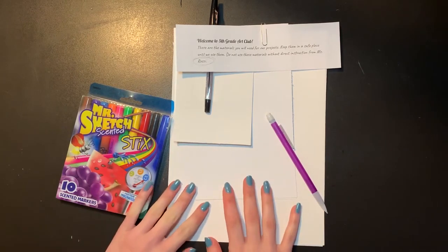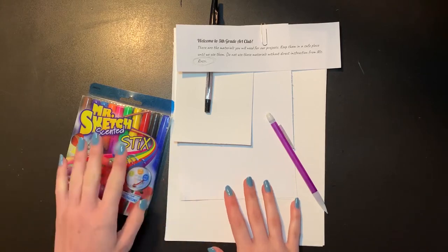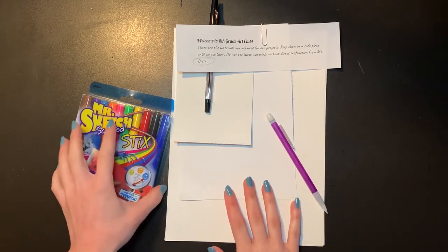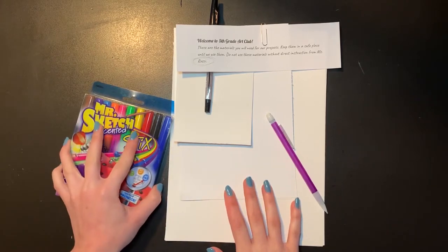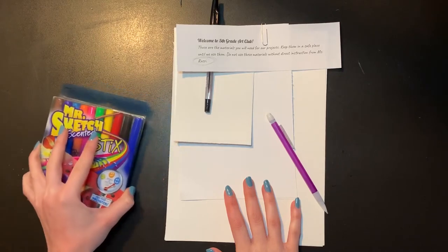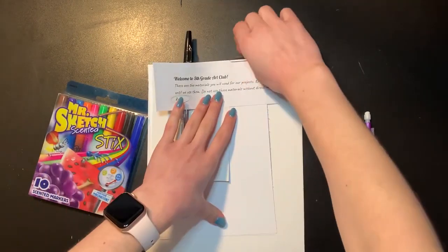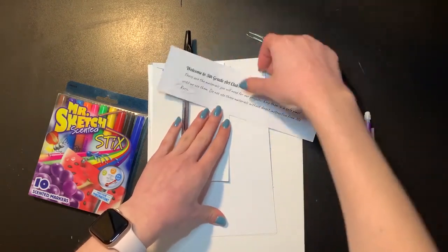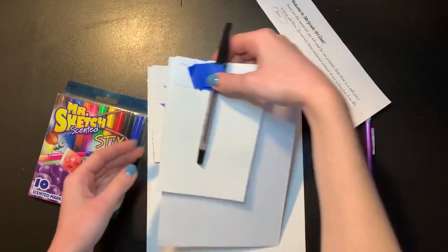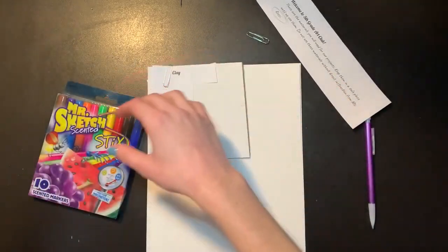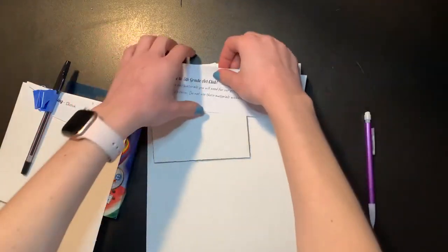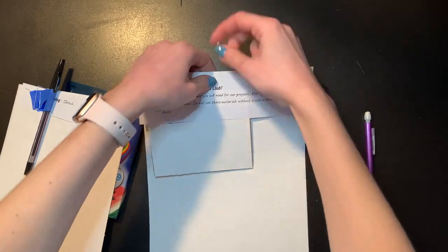You're going to need your materials from your art club folder. Inside you should have some washable markers. If you have other washable markers at home, you can use those as well. I just gave you these in case you didn't have any at home. We're going to need a pencil, and then inside our art club materials pack, we're going to take all the materials for our printmaking project. Everything else can be put back in our folder for next time.